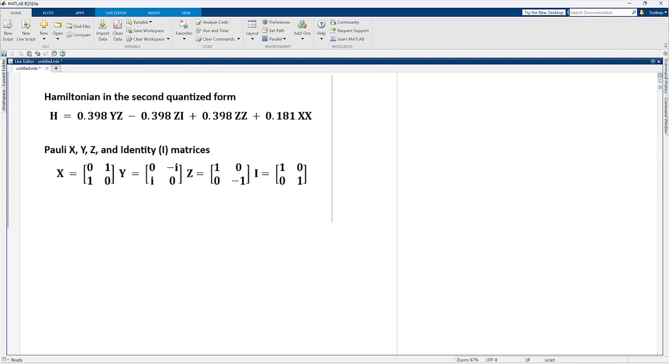For this demo, let's look at a chemistry problem Hamiltonian in the second quantized form. This form means that the Hamiltonian is expressed using the Pauli matrices X, Y, Z, and identity gates only.